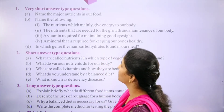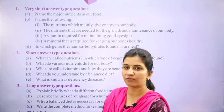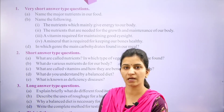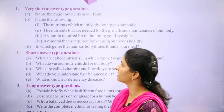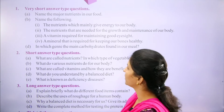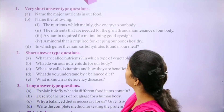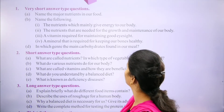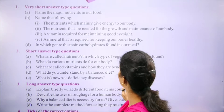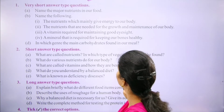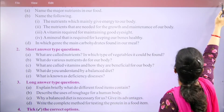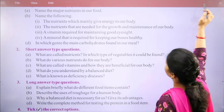Name the major nutrients in our food. The major nutrients present in our food are carbohydrates, fats, and proteins. Name the nutrients which mainly give energy to our body. The nutrients which give energy to our body are called carbohydrates.